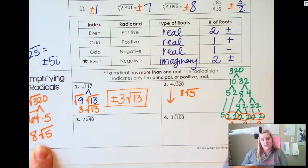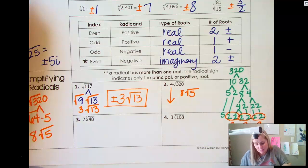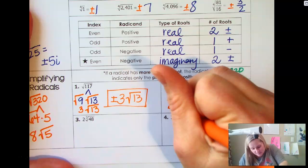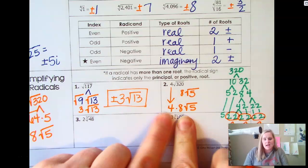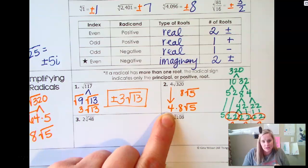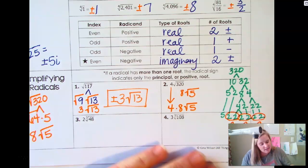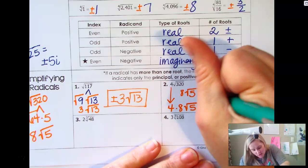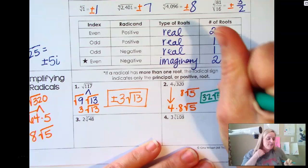Either way you get the same answer, whether you use your factors or whether you prime factorize — I don't care how you do it as long as you get the correct answer. We still have to bring that 4 down. The 4 is on the outside and 8 is on the outside, so we multiply those together. 4 times 8 gives us 32, so this is 32 square roots of 5 as a simplified answer.